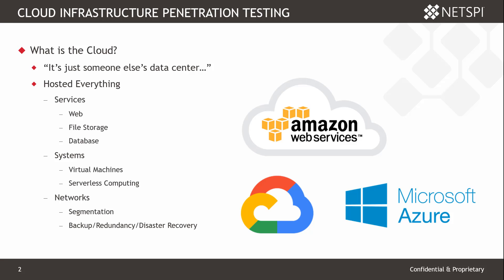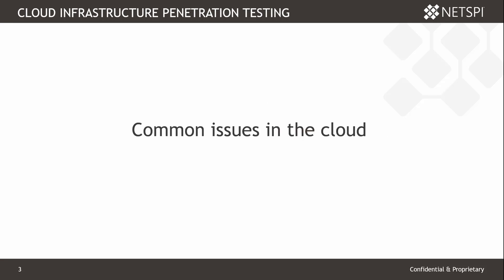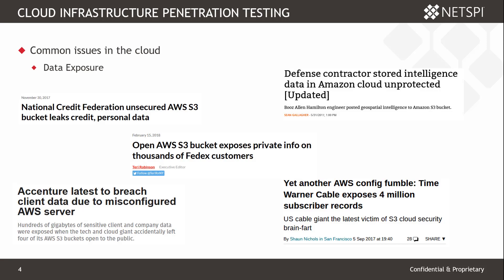When you're moving things out to the cloud, there are some common issues that come up. The first one is data exposure. We can see by all of the headlines here that there are a number of insecure data stores out there on the internet. These are frequently the big cloud items that end up in the headlines — somebody misconfigures an AWS S3 bucket and all of a sudden credential data or personal information is exposed to the internet unintentionally.